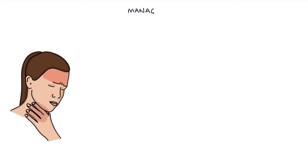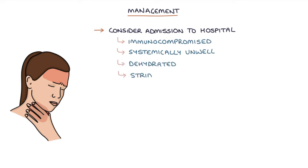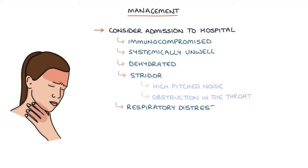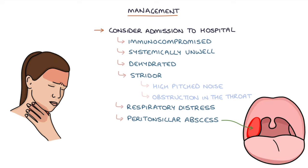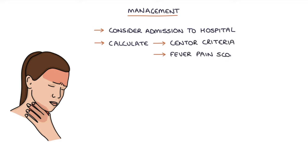Let's talk about management. Consider admission to hospital if the patient is immunocompromised, systemically unwell, dehydrated, if stridor is present — stridor is a high-pitched noise that occurs with breathing when there's obstruction in the throat — respiratory distress, a peritonsillar abscess or quinsy, or cellulitis. When tonsillitis is the most likely diagnosis, you can calculate the Centor criteria or the FeverPAIN score.